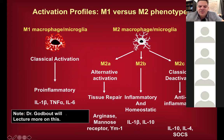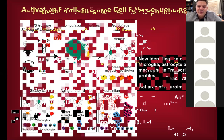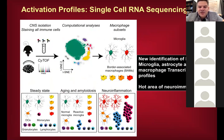The microglia profile concept is important because it allows us to categorize different cells. This comes from single cell sequencing — an advanced technique where you isolate cells from the brain and spinal cord, make single cell suspensions, tag them with primer sets. There's also CyTOF, which is profiling by flow cytometry, both of which add to the profiling approach.